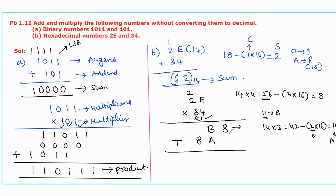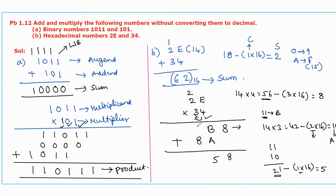Now we add these two partial products. Starting: 8, then B plus A — B means 11, A means 10, so the sum is 21. This is not a hexadecimal digit, so we subtract one 16: 21−16=5 is the sum and the carry is 1, forwarded to the next position. The resultant value is 958 base 16. This is the final product of the hexadecimal numbers and the complete solution for the given problem of part A and part B. Thank you.